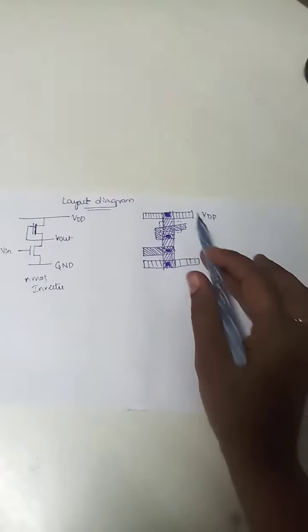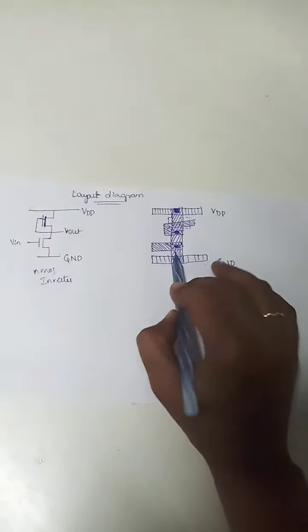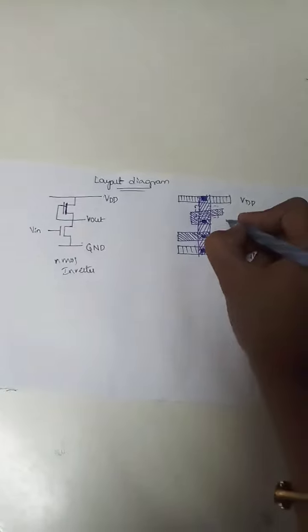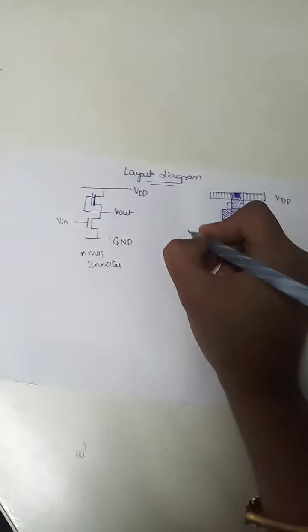Here, no color is represented, because this is layout diagram. This is the metal. And this is N diffusion. And this is polysilicon. Similar way, indicate Vin and Vout.